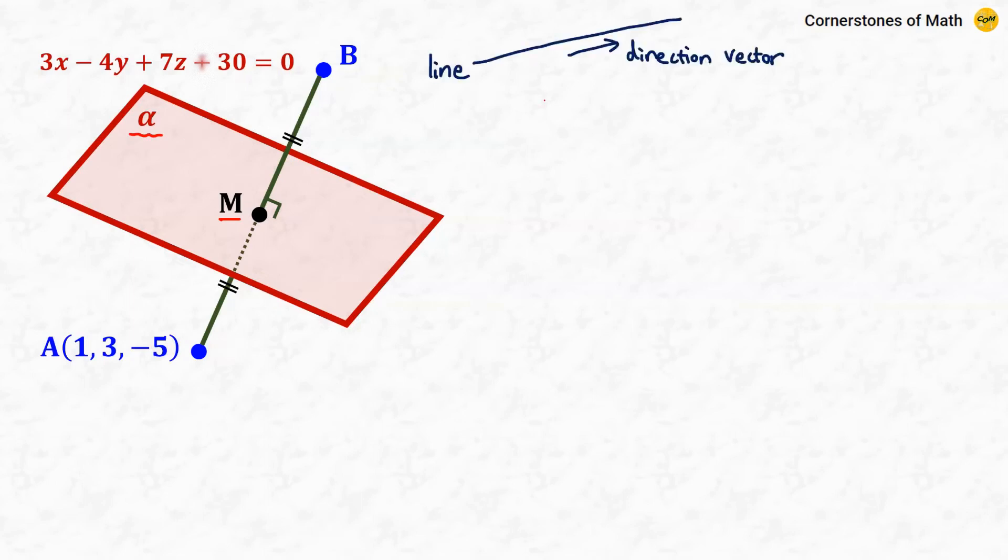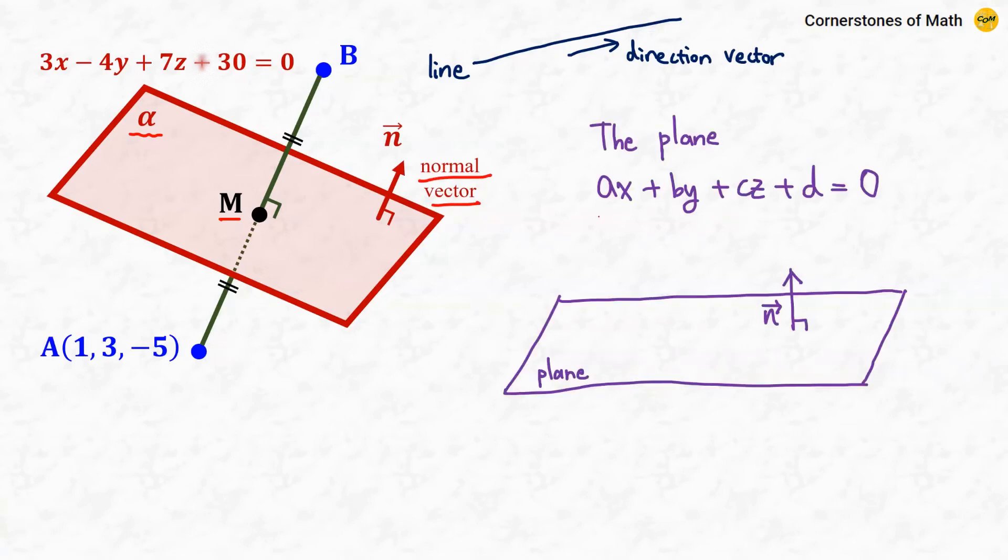Just like the line has a direction vector, the plane has a normal vector, that is, the vector that is perpendicular to the plane. And here, we have to use the following knowledge about the planes in coordinate space. Generally, the equation of a plane is given as Ax + By + Cz + D = 0. Then, the normal vector of this plane is given as (A, B, C). So we have to use this property.